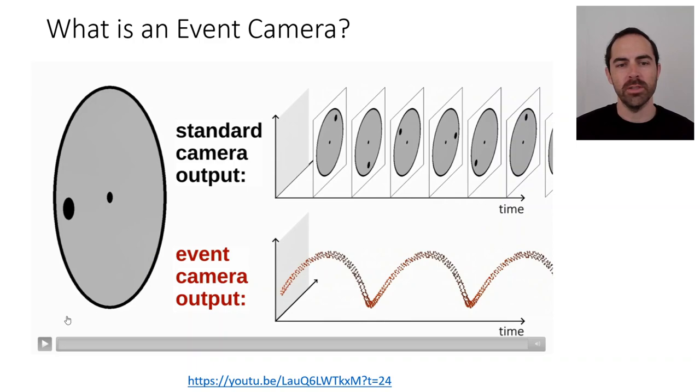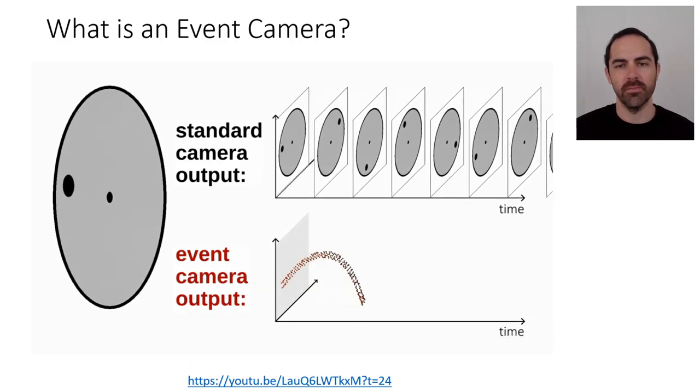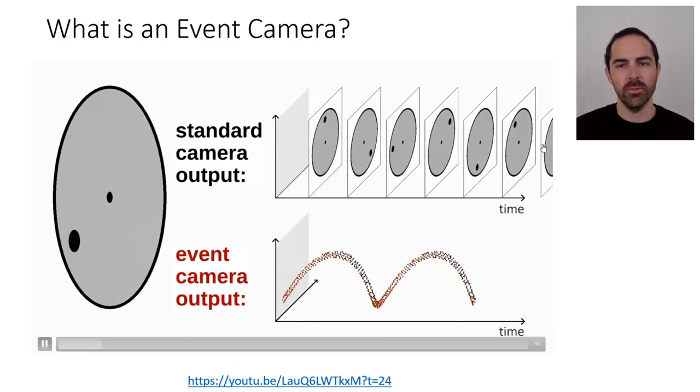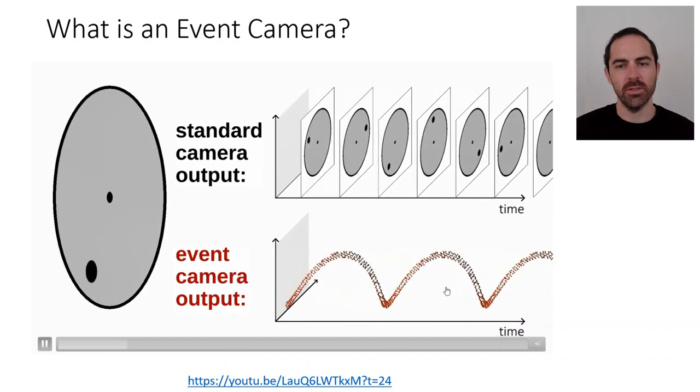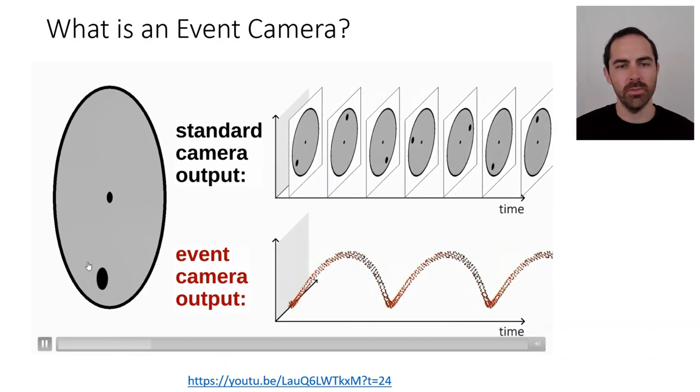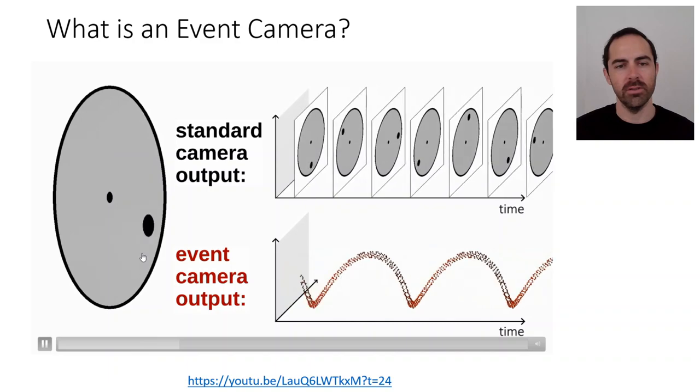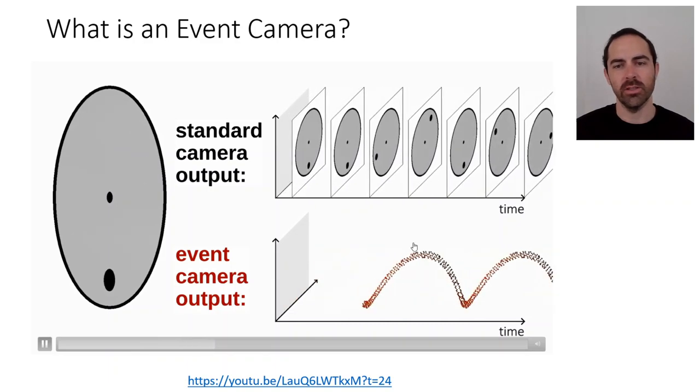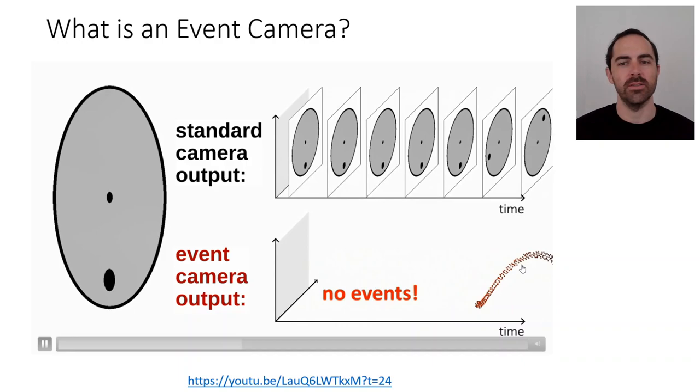And in the bottom we will see the output of an event-based camera, which is this spiral of events in spacetime. Let's play it. So as I said, in the top you see the output of a standard camera with images, and in the bottom we see that only the pixels that are informative, only those pixels that change intensity, they are producing an output and that's why we see this spiral of events in spacetime.